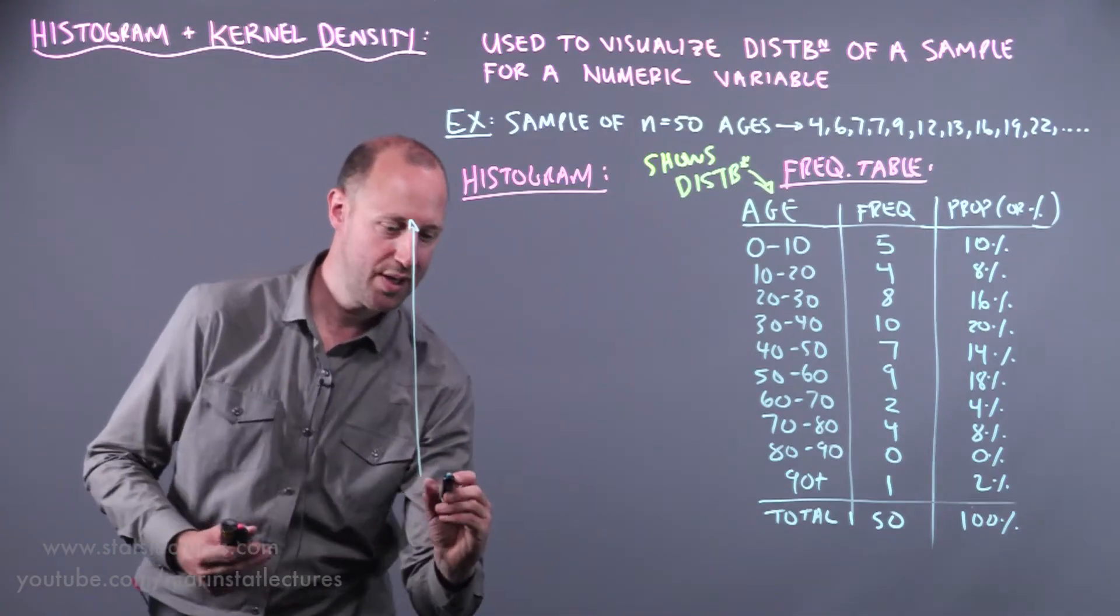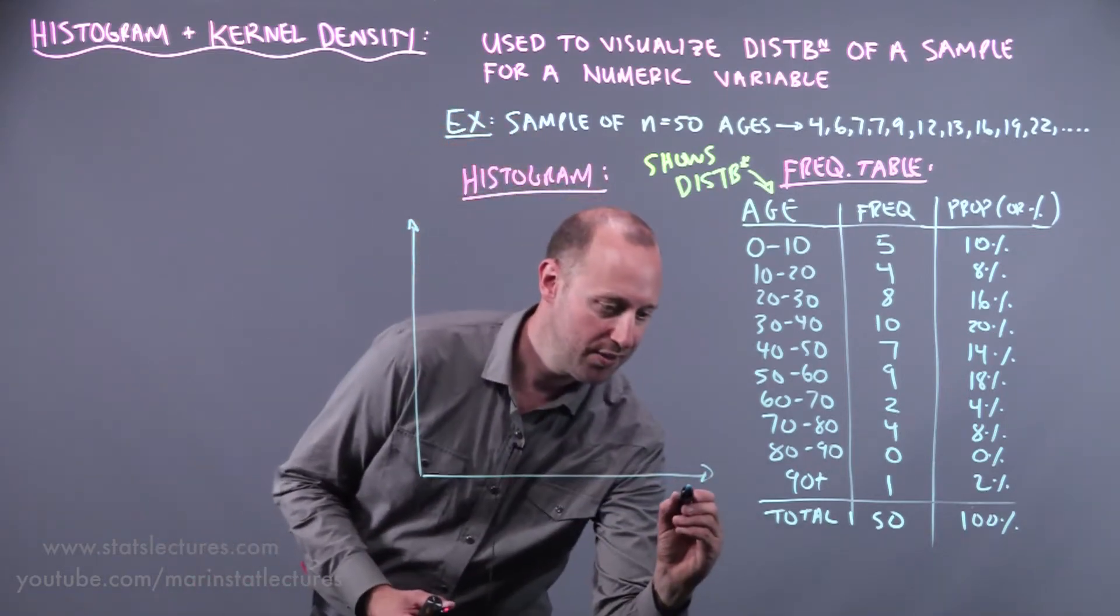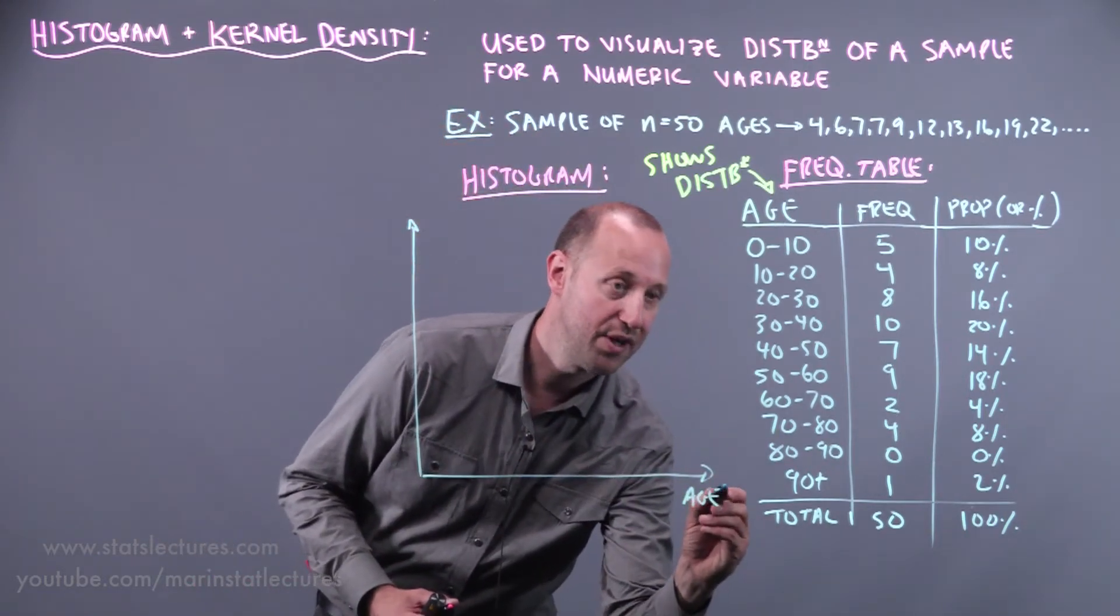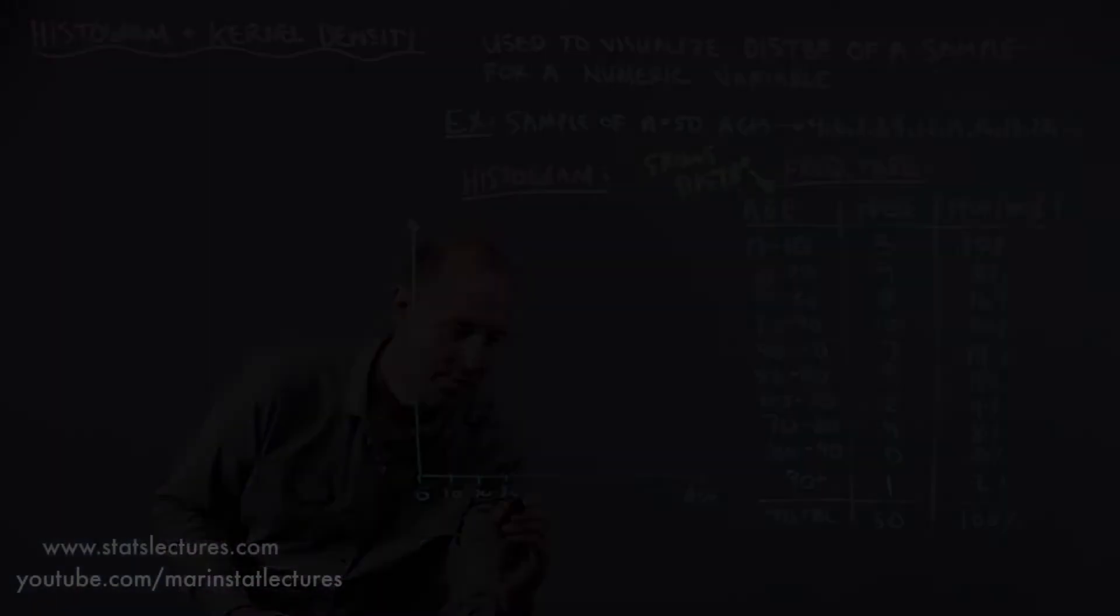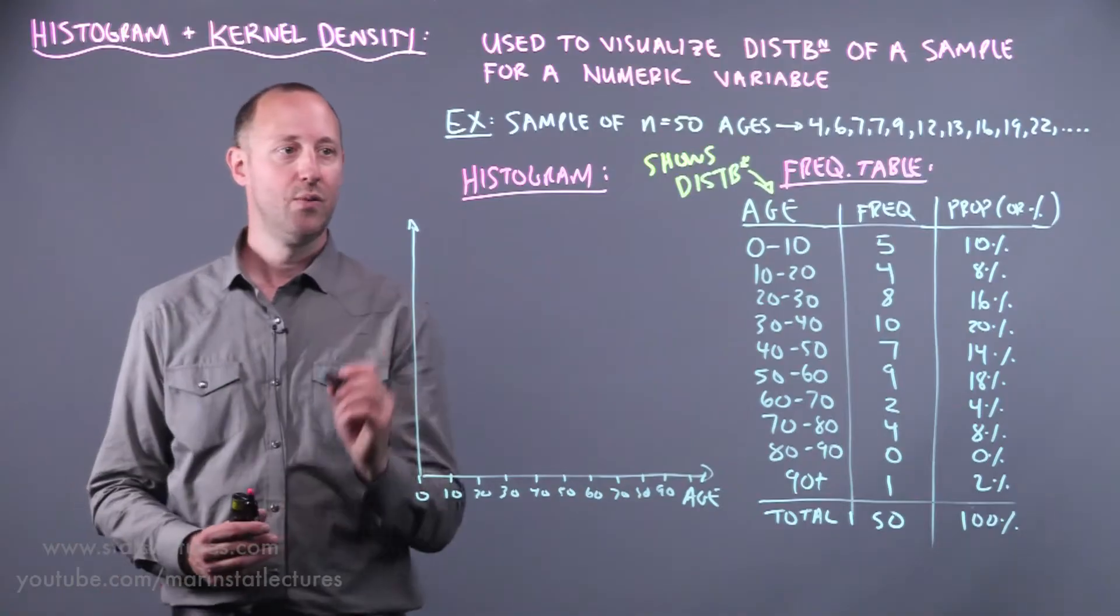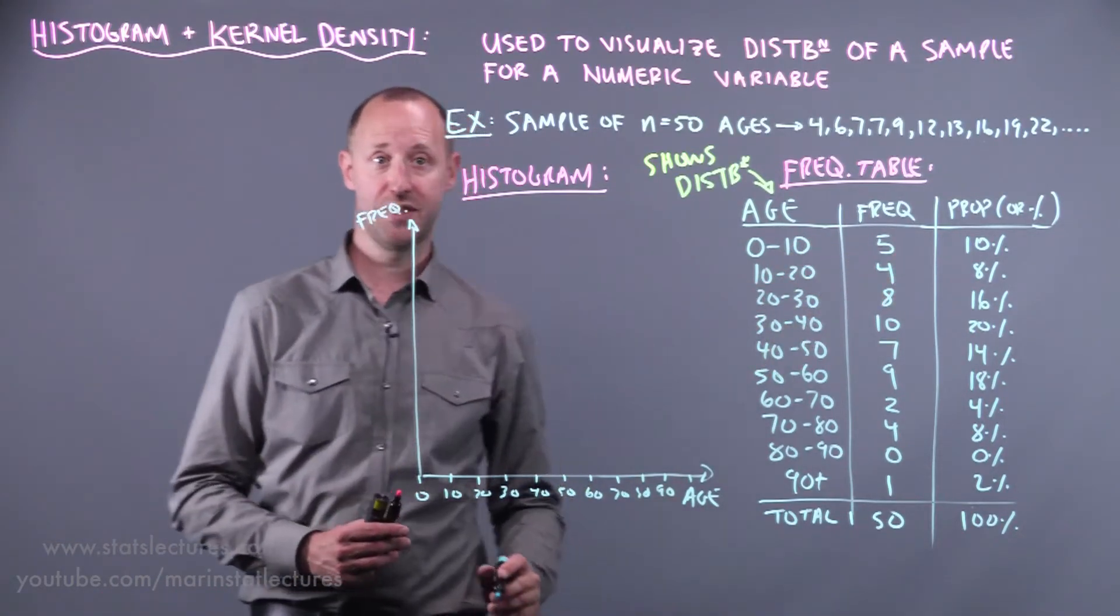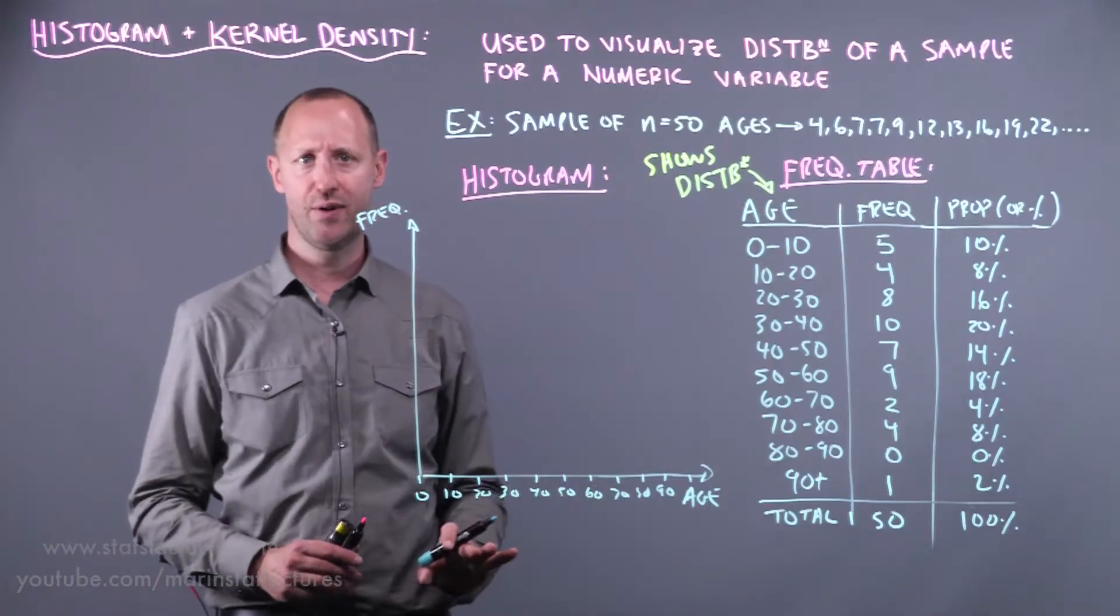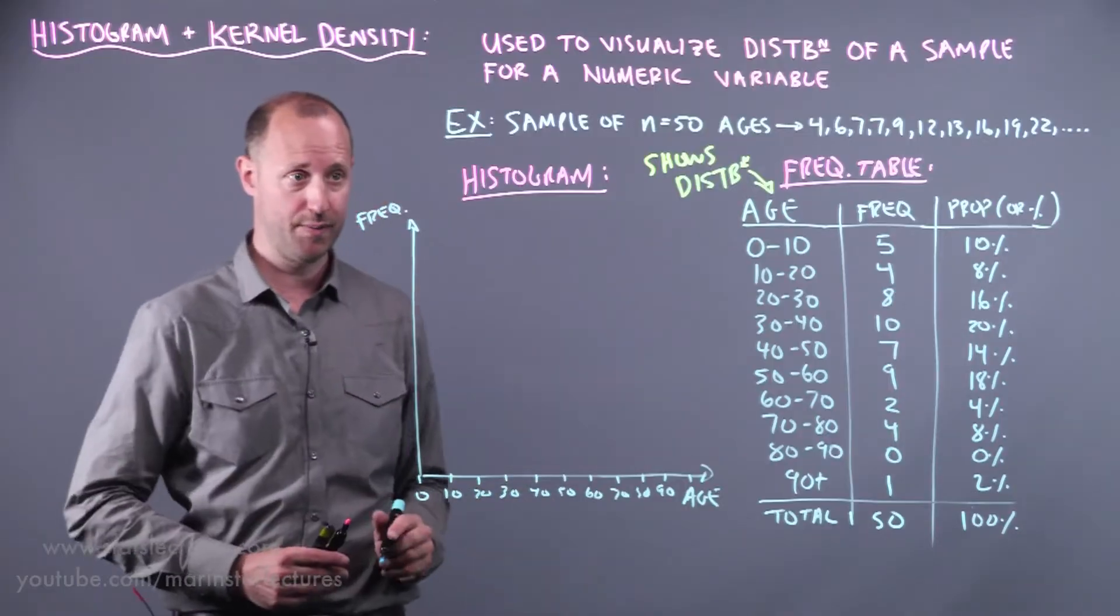Essentially what we're going to do is create a plot of this table. So along the x-axis goes the variable age 0 to 10, 20. And then on the y-axis we can either put the frequency or we can put the proportion or the percentage. Here I'm going to choose to put the frequency but again it doesn't matter the plot will look the same. It's really about which one you prefer to put.